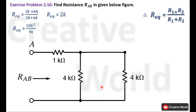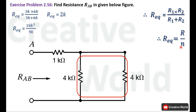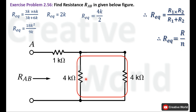Again the circuit is converted into a parallel connection, but now both resistances have the same value, so we use the formula R equivalent equals R divided by n, where R is 4 kΩ and n is 2. Therefore R equivalent equals 4 kΩ divided by 2, which gives 2 kΩ. We replace these two resistances with a single 2 kΩ resistor.